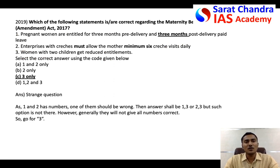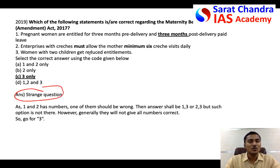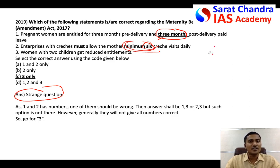Next example — and I gave this question intentionally because you cannot follow the rules blindly. Here, one statement has a fact, another statement has a fact, and a third also has a fact. As I told you, when two facts appear, one will be correct and one will be wrong. So among statements one and two, definitely one shall be wrong — both cannot be correct.